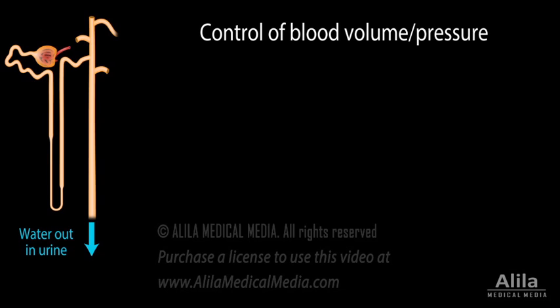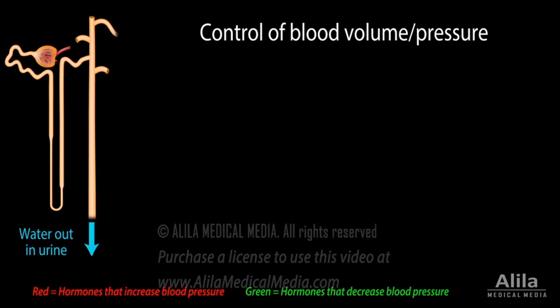Water excretion by the kidneys is regulated by a number of hormones, including vasopressin, also known as antidiuretic hormone, a hypothalamic hormone released in response to low blood volume.